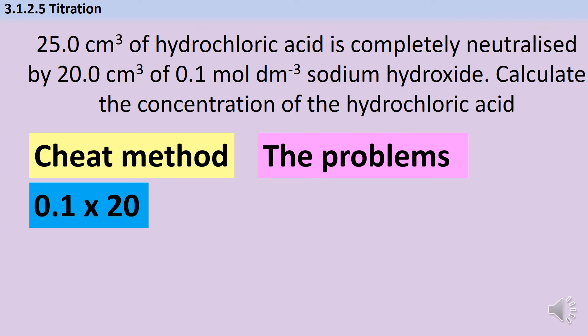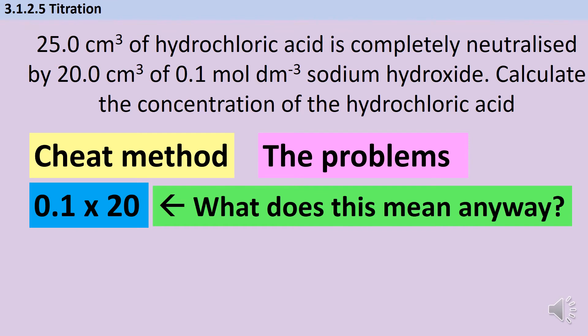So here's my first problem. I've done this little calculation: concentration times volume, 0.1 moles per dm³ times by 20 cm³. But what does it actually mean? If I do that calculation, I get an answer of 2, and I can write that 2 on my exam paper, but the problem is it doesn't mean anything. There isn't a 2 anywhere in the calculation, and the reason for that is because my units are wrong. I've got a concentration expressed in moles per dm³ and a volume expressed in cm³. So when I multiply them together, I don't get moles, I get thousandths of a mole, which is just not a useful concept.